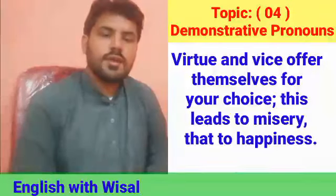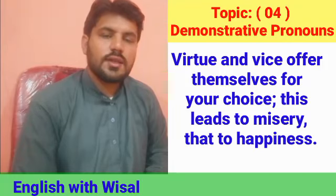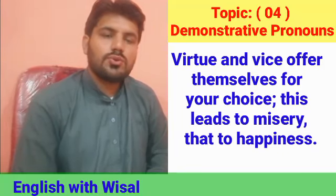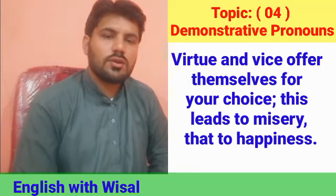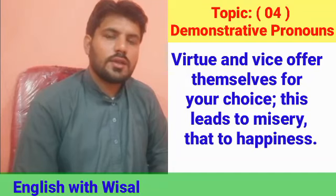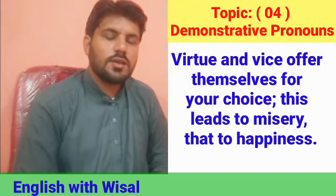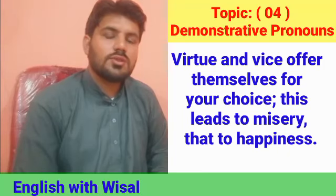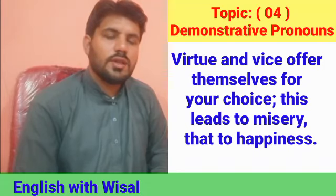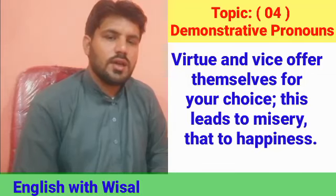For example: 'Virtue and vice offer themselves for your choice. This leads to misery. That leads to happiness.' In this sentence, 'this' refers to 'vice' — the last mentioned — which leads to misery, and 'that' refers to 'virtue' — the first mentioned — which leads to happiness.